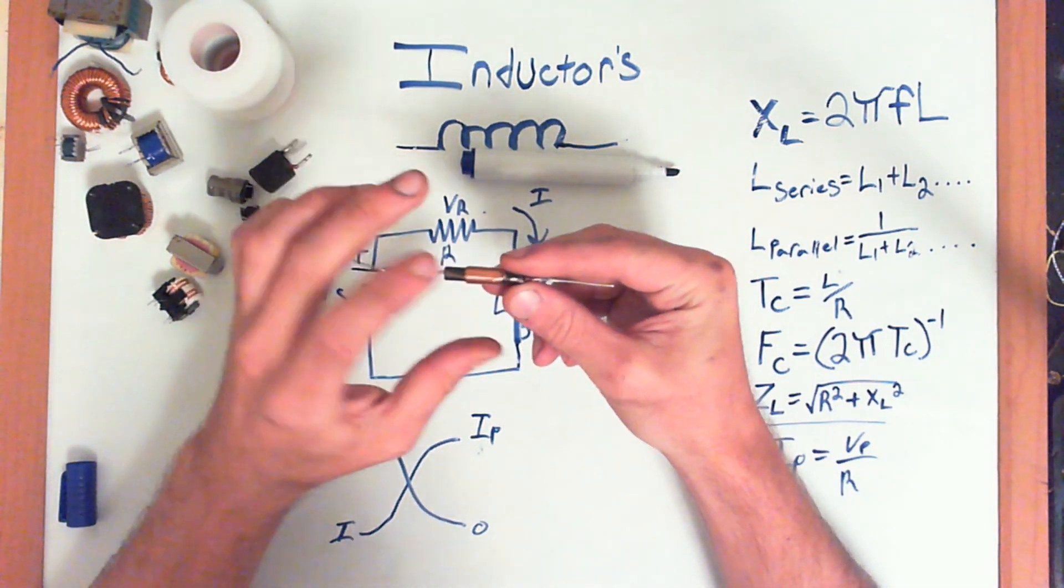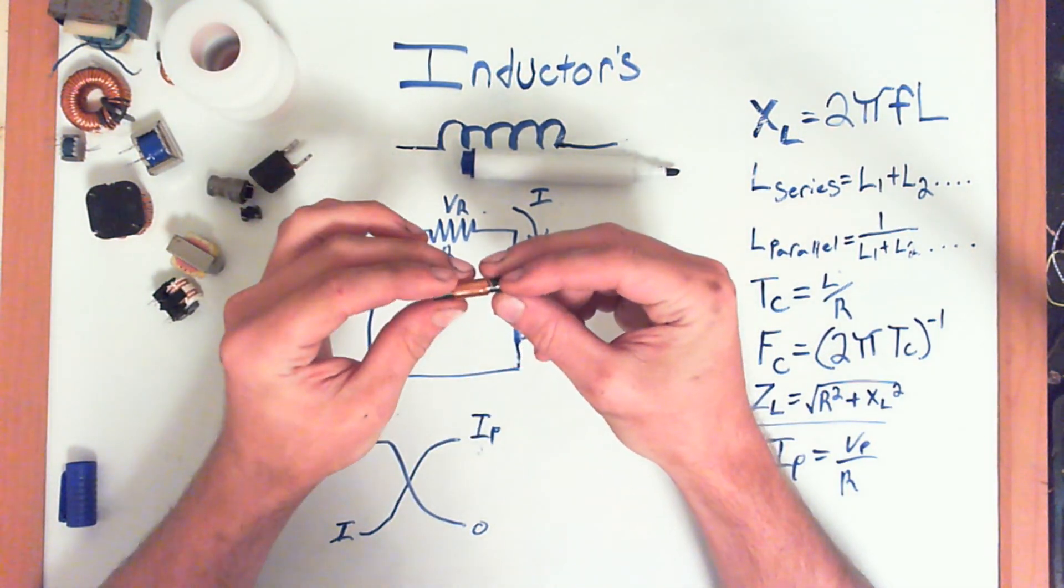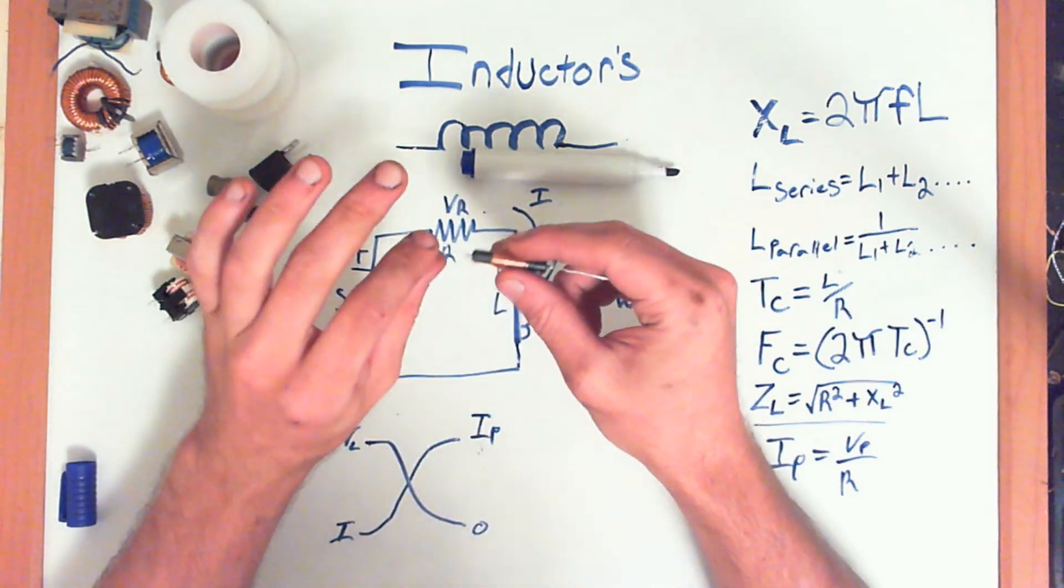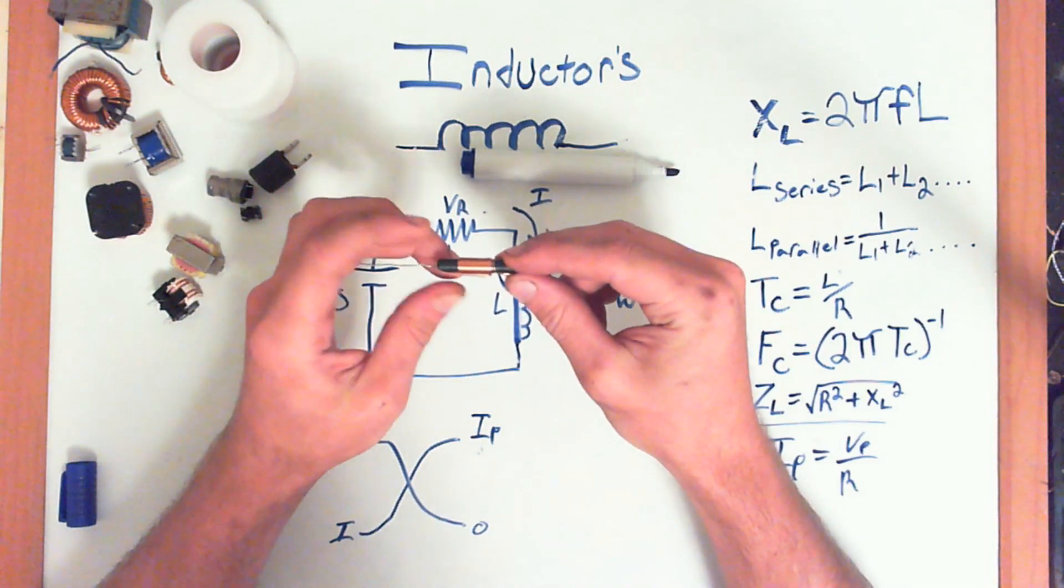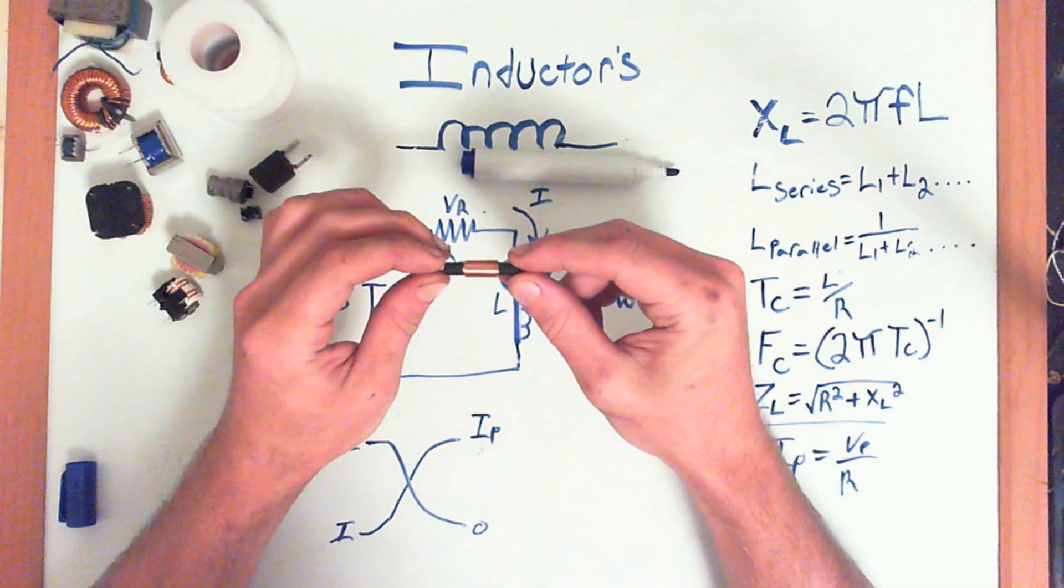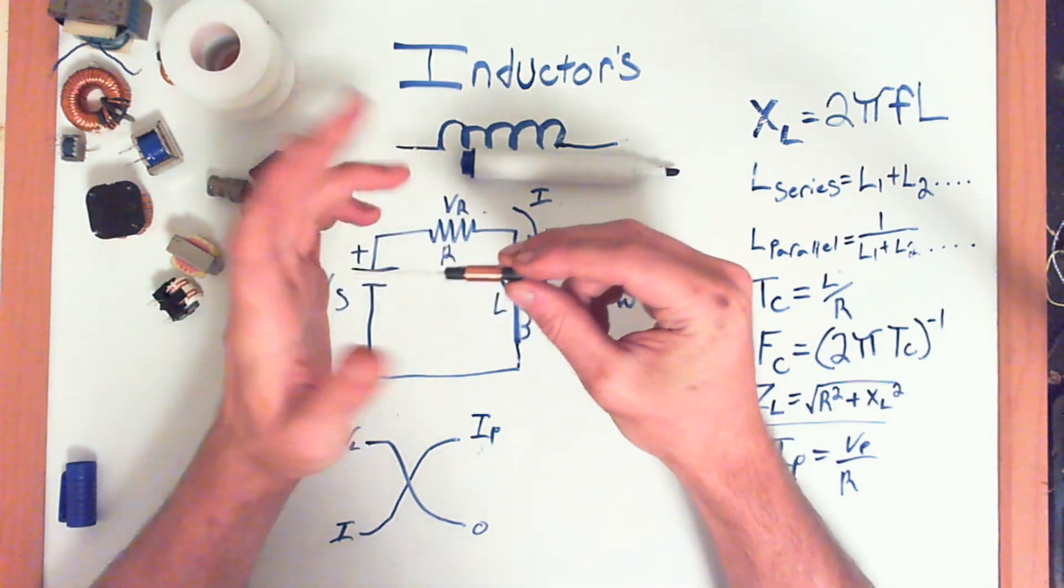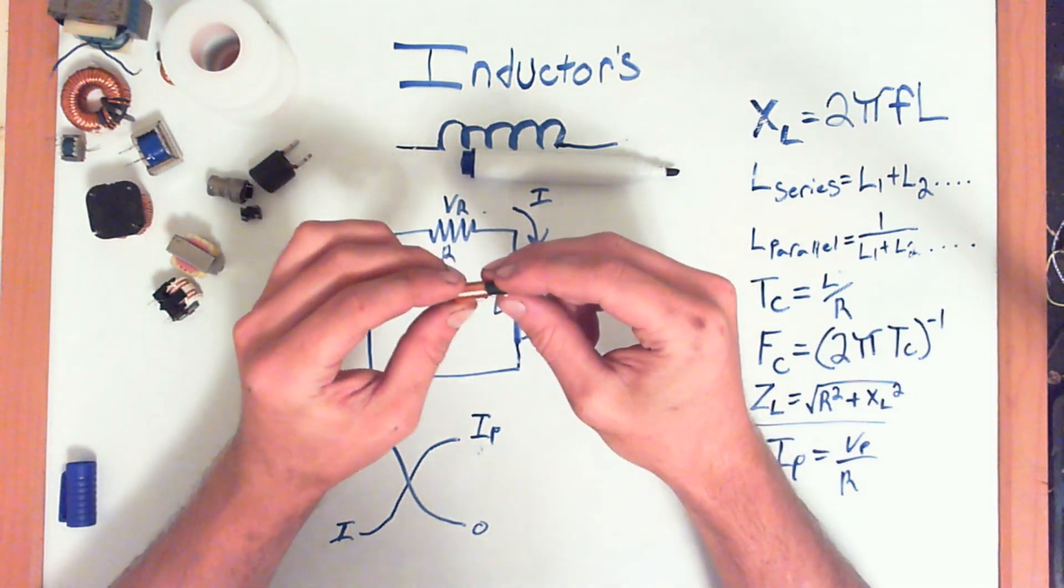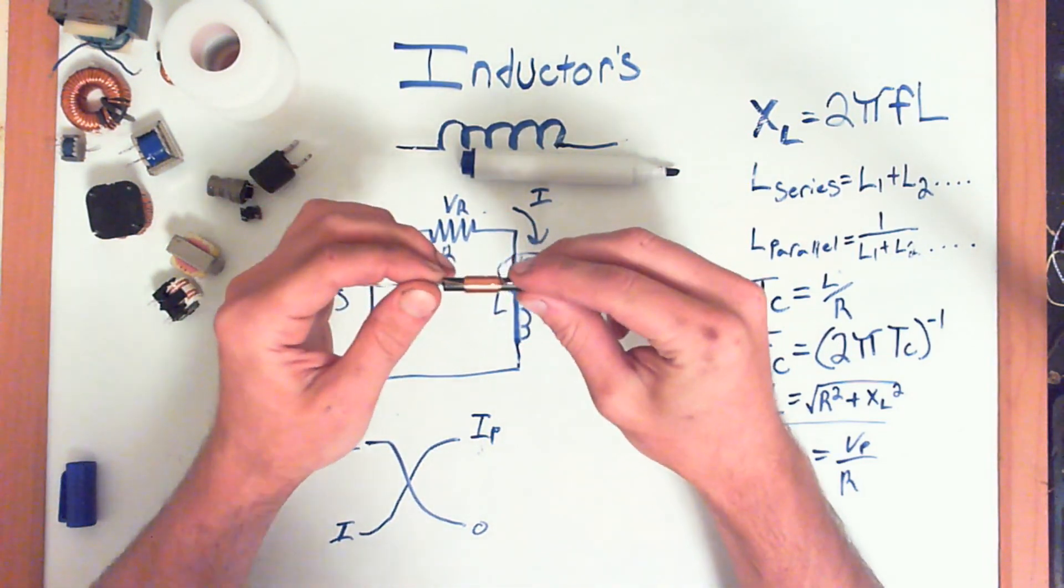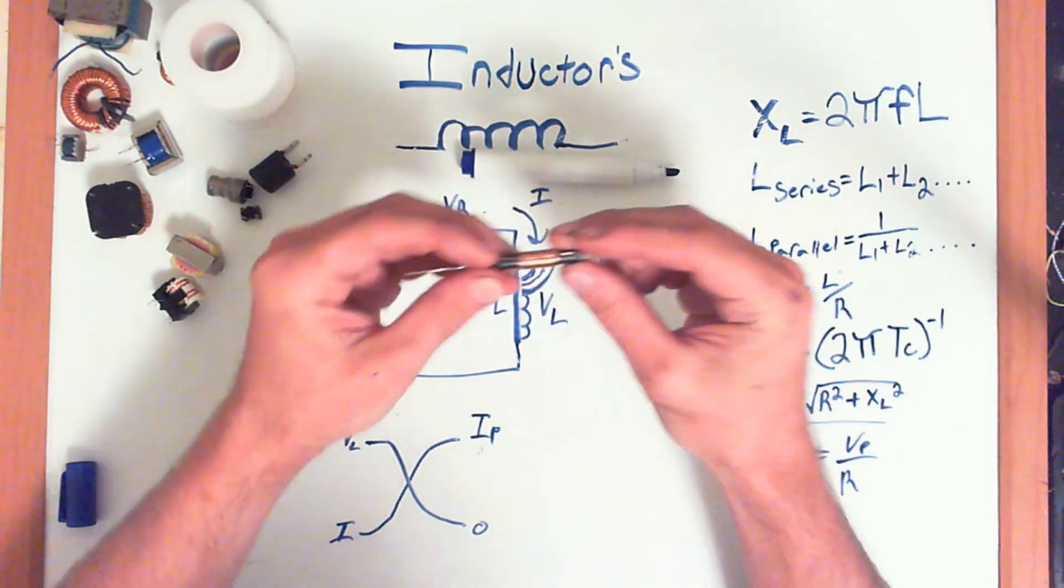Each type of wire has a different resistance. Copper being one of the lowest, that's cheapest to use. You can use platinum or gold. There's other better conductors than copper. But, copper is one of the few that's cheap and readily available and has very low resistance.